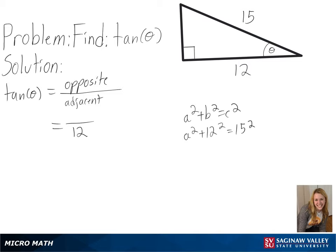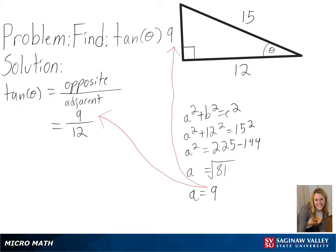Plugging in 12 for b and 15 for c, we will get the square root of 81 for a, or 9 as the length of our opposite side. So after simplifying, we will get 3 fourths as our final answer.